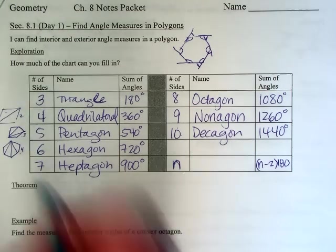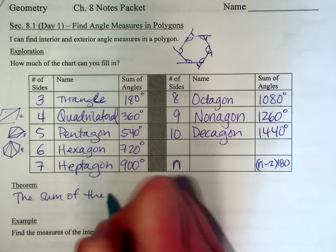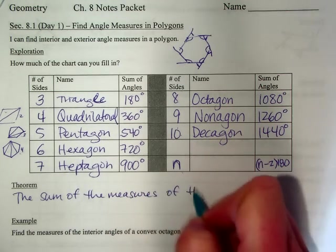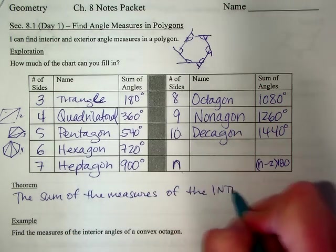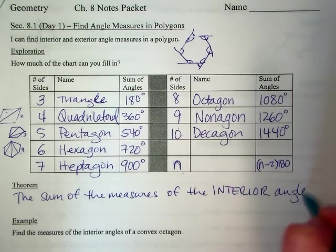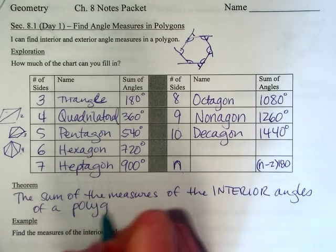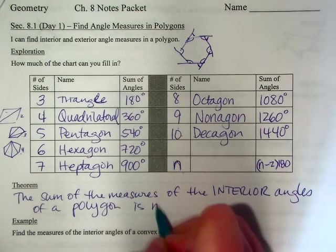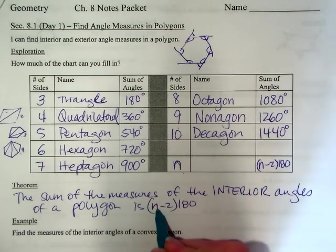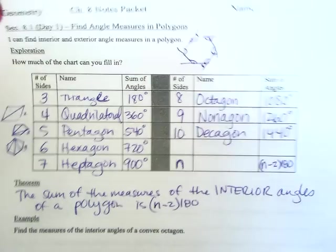So that is our theorem: the sum of the measures of the interior angles of a polygon is n minus two times 180. So whatever you have for number of sides, subtract two, that's how many triangles are in the shape, and then times by 180.